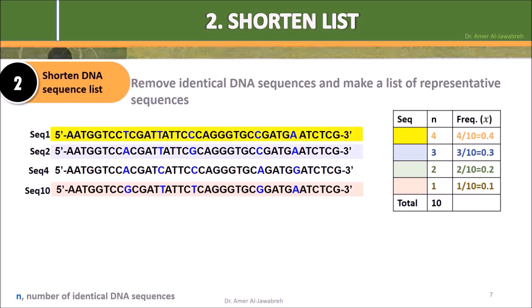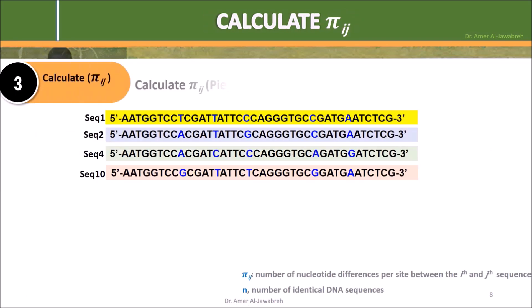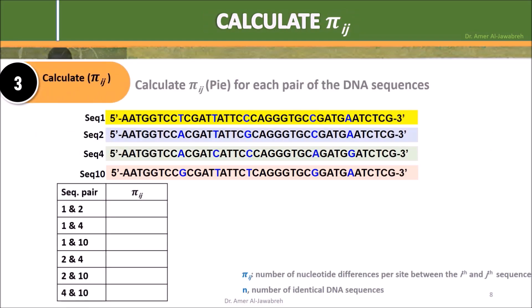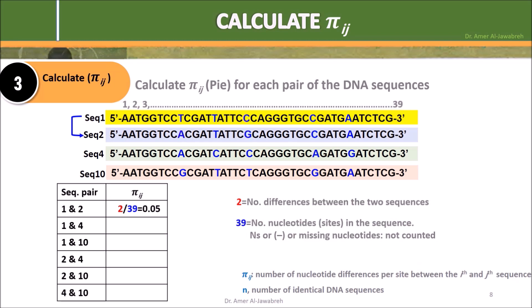The 4 DNA sequences representing the sample or population. Step 3: Calculate pi-ij for each pair of DNA sequences. Make a table that contains all probable pairs, with i the first sequence and j the second: 1 with 2, 1 with 4, 1 with 10, 2 with 4, 2 with 10, and 4 with 10. Pi-ij between sequences 1 and 2 equals 2 over 39, where 2 is the number of differences (represented by TA and CG) and 39 the number of nucleotides or sites in the sequence. Note that Ns, hyphens, or missing nucleotides are not counted.